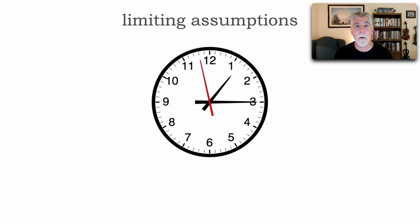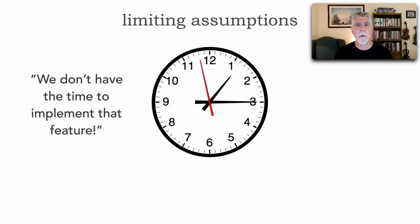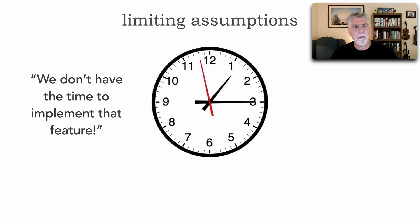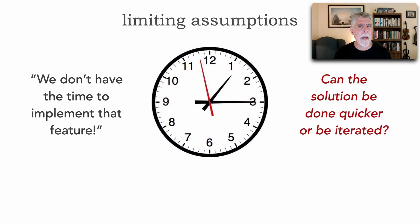For example, you might hear or say, 'We don't have time to implement that feature.' When we say things like this, we are placing a limiting assumption on our problem that prevents us from finding a solution. The way to counter that is to ask: can the solution be done quicker, or maybe iterated? Maybe we don't have to do the whole thing at this time.